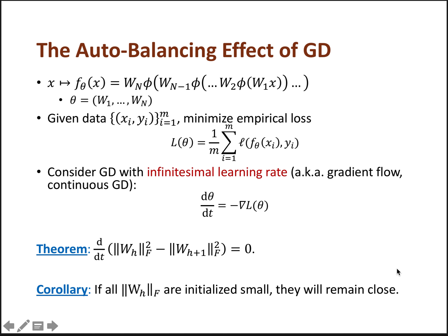And a direct corollary is that if all the layers are initialized to be small, they will always remain close to each other. So the highly unbalanced case will not happen if we run gradient descent with infinitesimal learning rates.